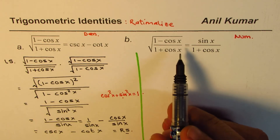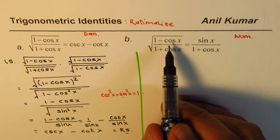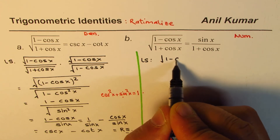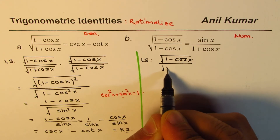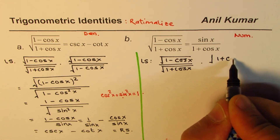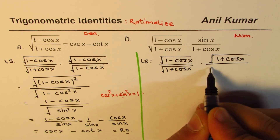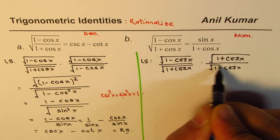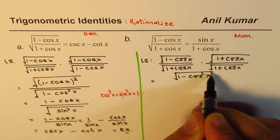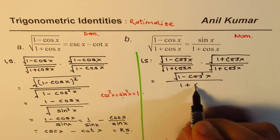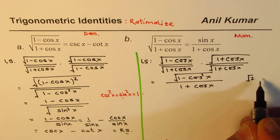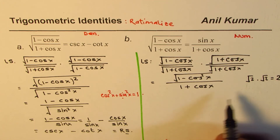Now let's begin with the second identity. Since sin x is in the numerator, we are going to rationalize the numerator. Starting with the left side — square root of (1 minus cos x) divided by (1 plus cos x) — rationalizing the numerator means we multiply and divide by 1 plus cos x, the conjugate of the numerator. That gives us, in the numerator, square root of (1 minus cos squared x), and the denominator becomes (1 plus cos x). When you multiply square root times square root, for example square root of 2 times square root of 2 gives 2.